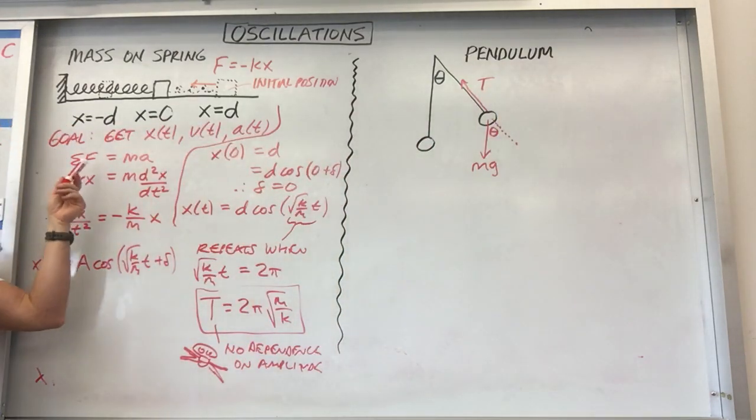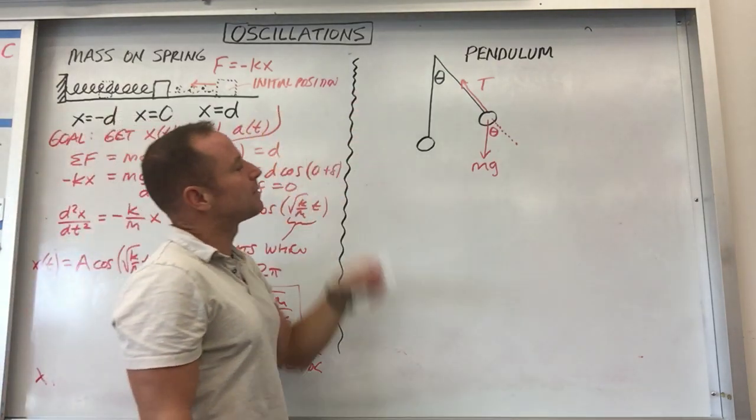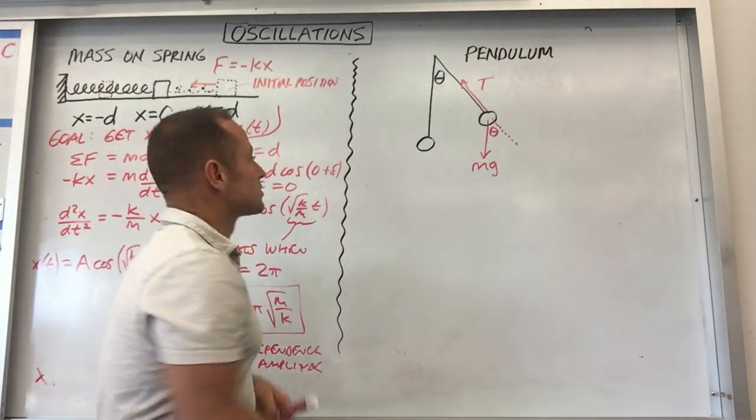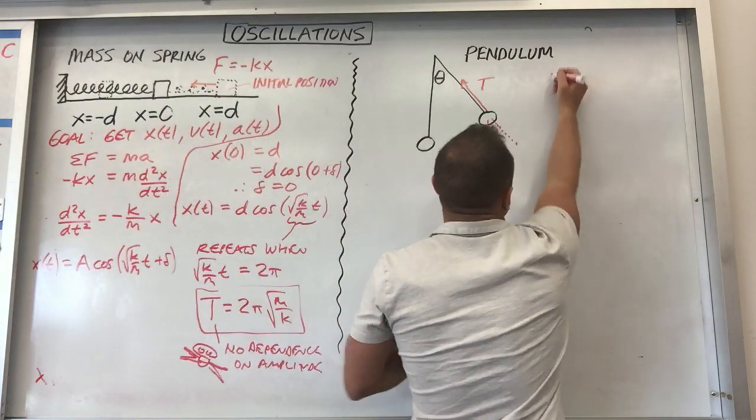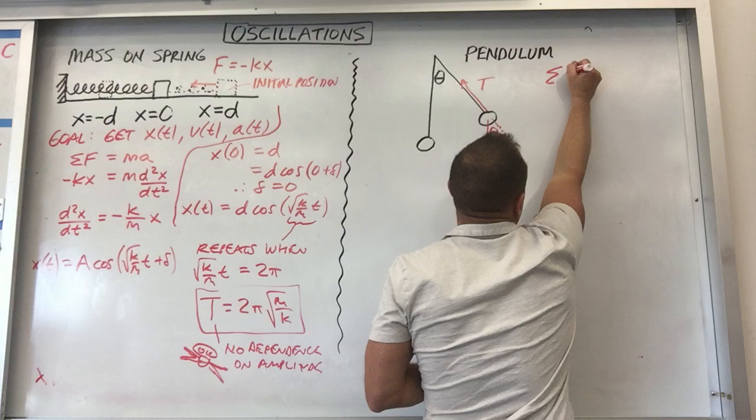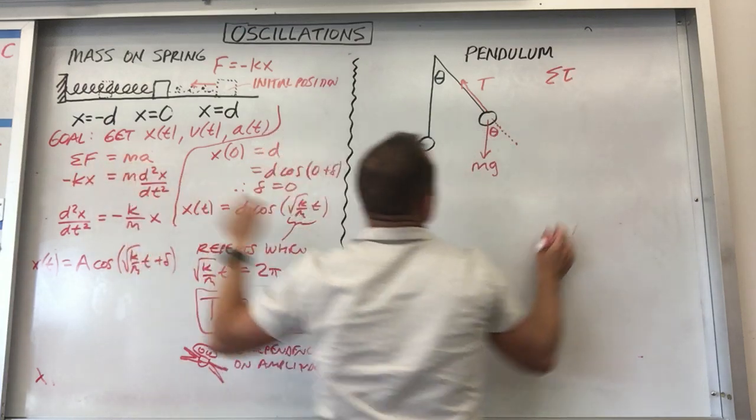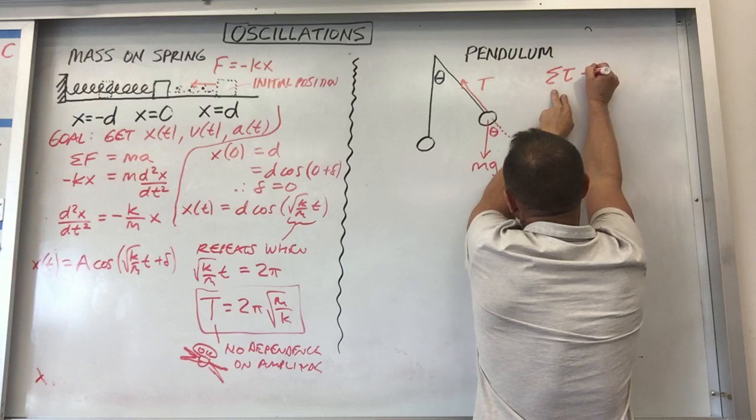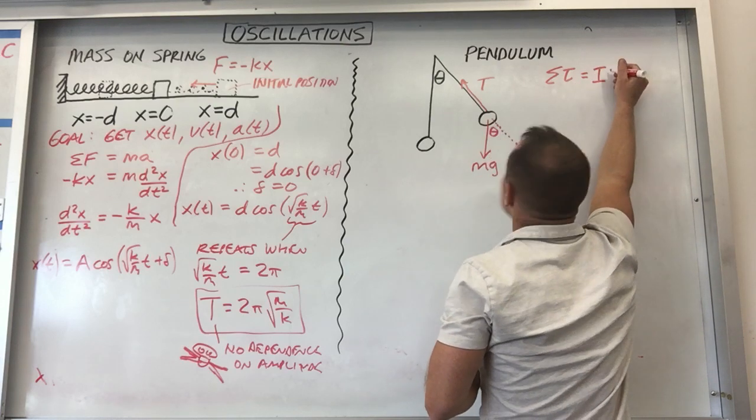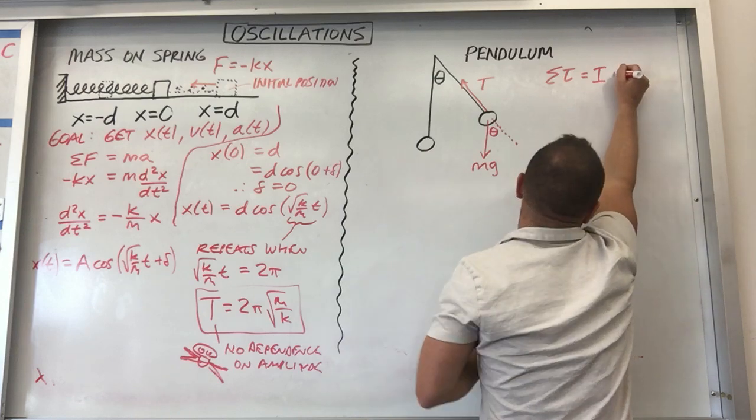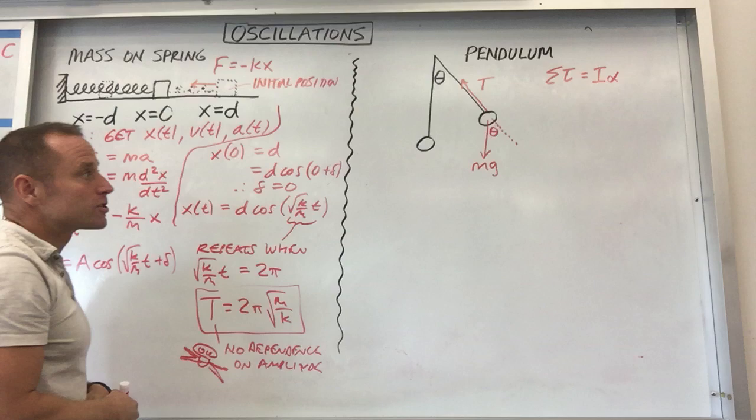So what we did with the mass on the spring was we started with F equals ma. It's possible to do that in a way with this, but what I'm going to choose to do instead is the rotational version of F equals ma. So I'm going to look at torque equals I alpha. Instead of force equals mass times acceleration, I'm going to do rotational force or torque equals rotational mass or moment of inertia times rotational acceleration or angular acceleration, which is alpha.